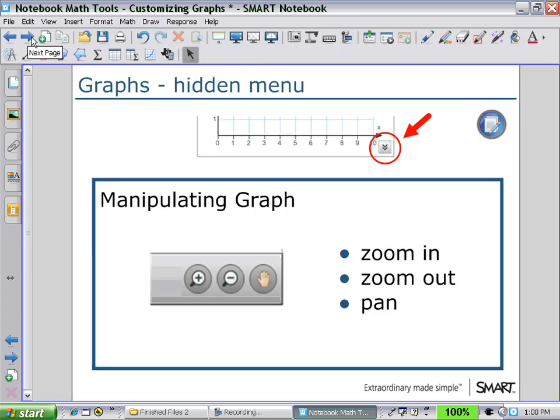First, to customize our graphs. In the bottom right of your graphs, you will see two arrows that allow you to reveal a hidden menu.